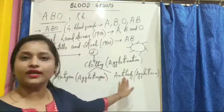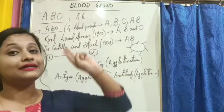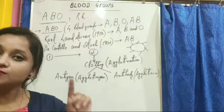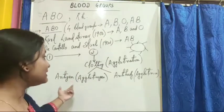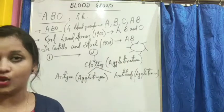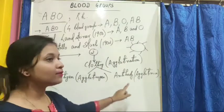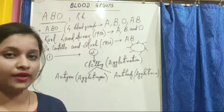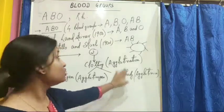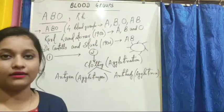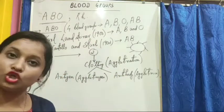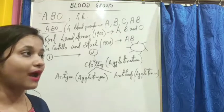Now, this antigen and antibody related to blood groups is different from what we discussed in the previous class. Previously, antigen meant a foreign particle entering our body, and antibodies were the soldiers of our body. But here, these antigens and antibodies are proteins that determine our blood group.